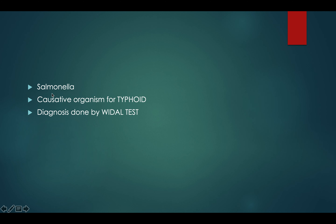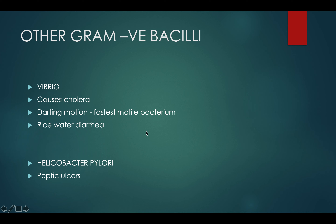Salmonella typhi and Salmonella paratyphi are the causative organisms for typhoid and paratyphoid. The main thing to remember is the Widal test — you don't need detail on how it's performed. If you see the Widal test in a question, the answer is going to be typhoid, because it's a diagnostic test for typhoid.